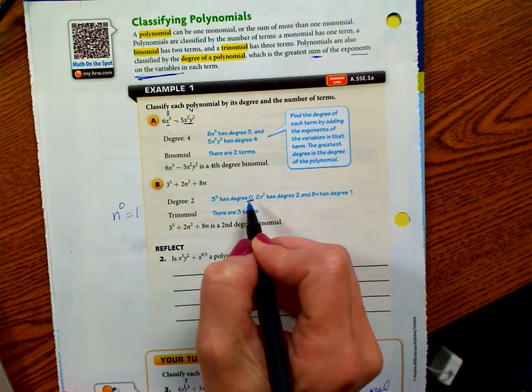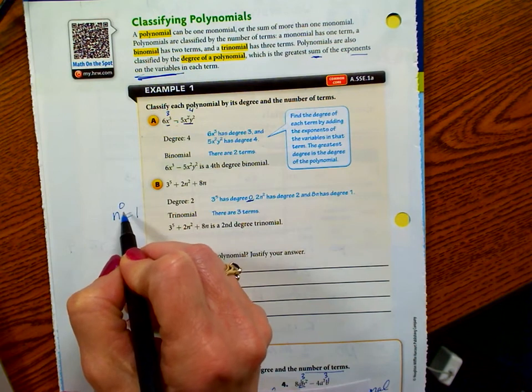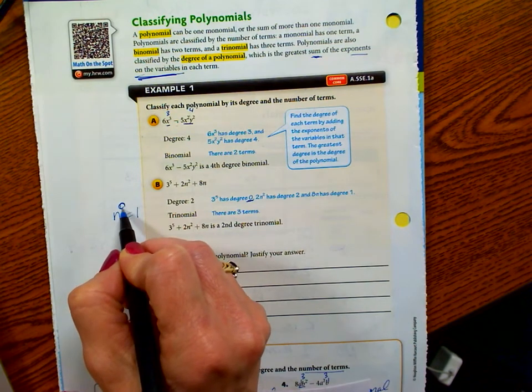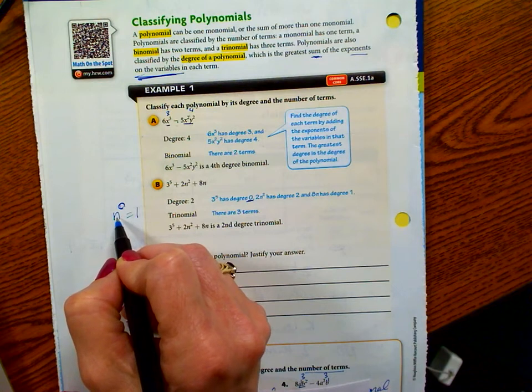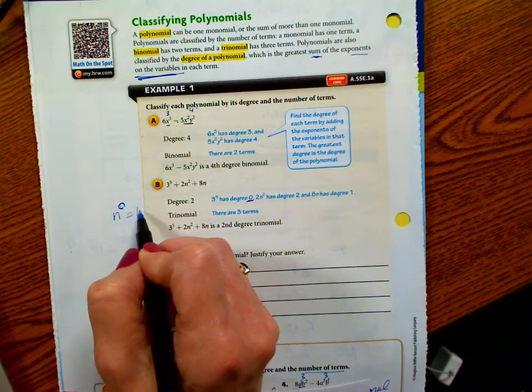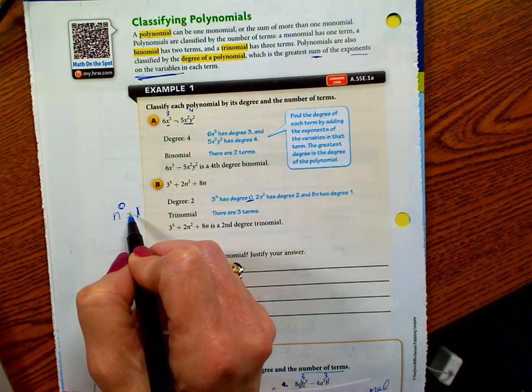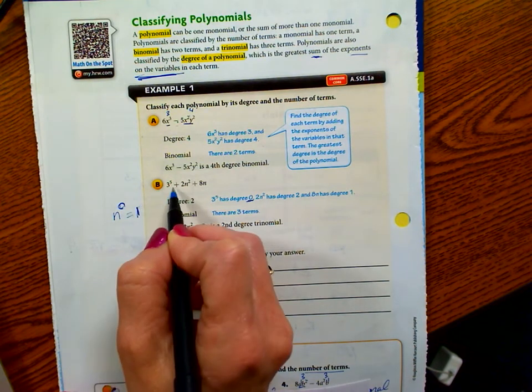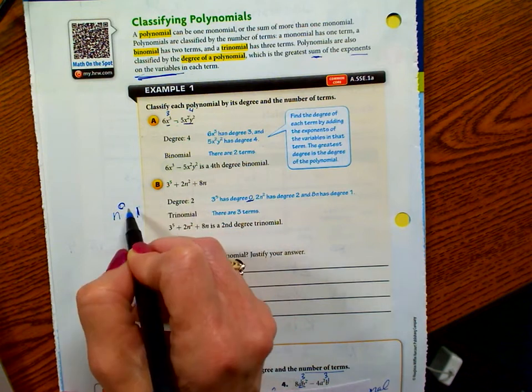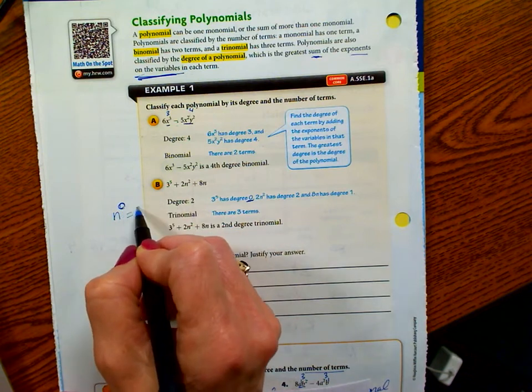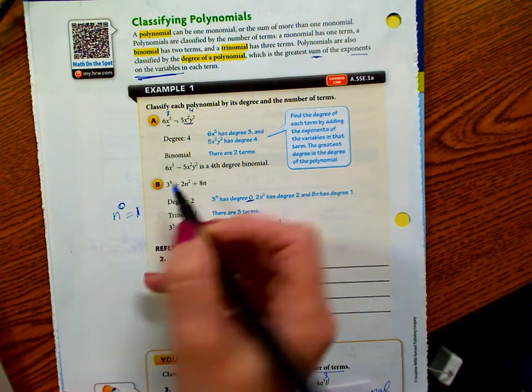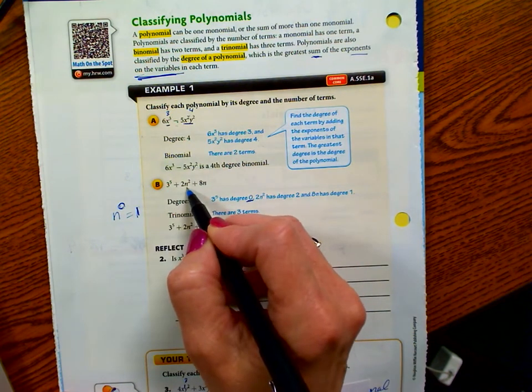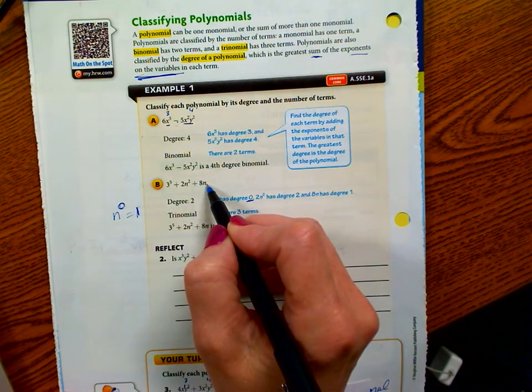Now, if you really want to talk about it, that says three to the fifth has a degree of zero. Well, the reason it has a degree of zero is because any variable or number raised to the zero power is going to be one. So there's really no variable there, because you can really say the degree is zero, because it turned out to be one, and three to the fifth times one is three to the fifth.